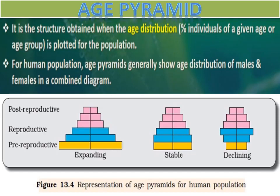The next type is the declining age pyramid, which makes an urn-shaped pyramid. Here the proportion of the reproductive age group is higher than individuals in the pre-reproductive age group. This represents a declining population, meaning negative growth in population. Such a pyramid is observed in countries like Japan.